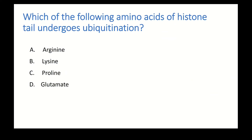Which amino acid of the histone tail undergoes ubiquitination? The answer is lysine — the epsilon amino group of lysine. The one-letter code for lysine is K.